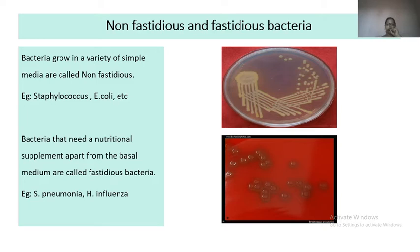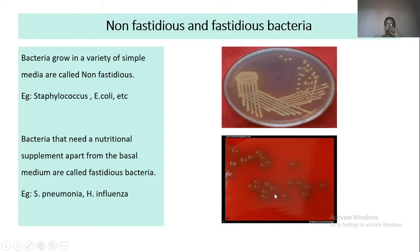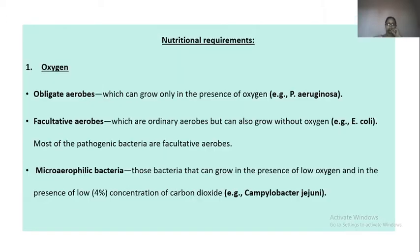Fastidious bacteria do not grow on simple medium, or even if they do, they don't express all their characteristics and colonies are not well developed. They need enriched media — media that have an extra source of nutrition such as blood. Streptococcus pneumoniae (pneumococcus) is a fastidious organism that grows well on blood agar; if you try to grow it on nutrient agar, you will see no growth.